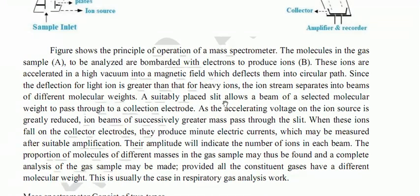As the accelerating voltage on the ion source is gradually reduced, ion beams of successively greater mass pass through the slit.